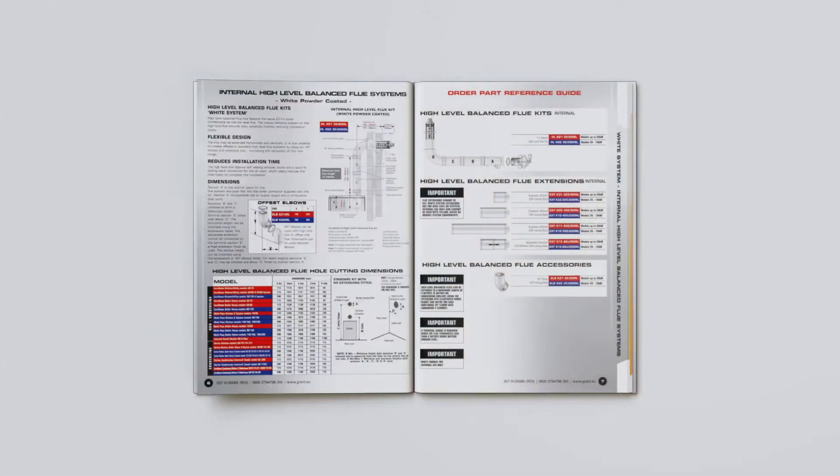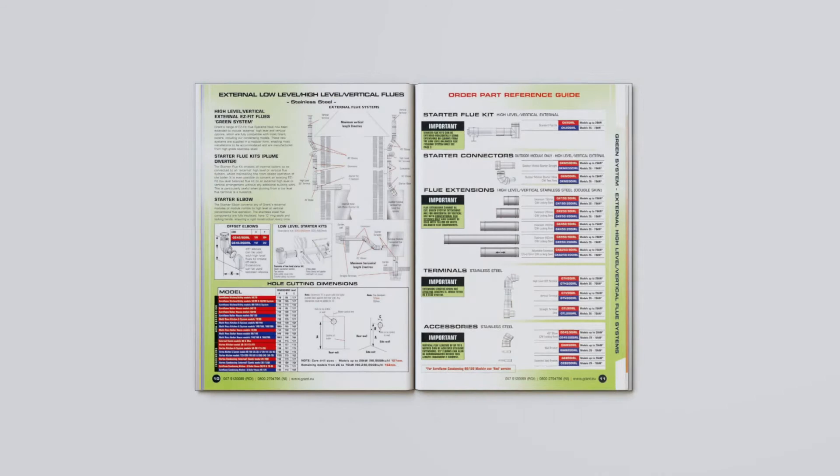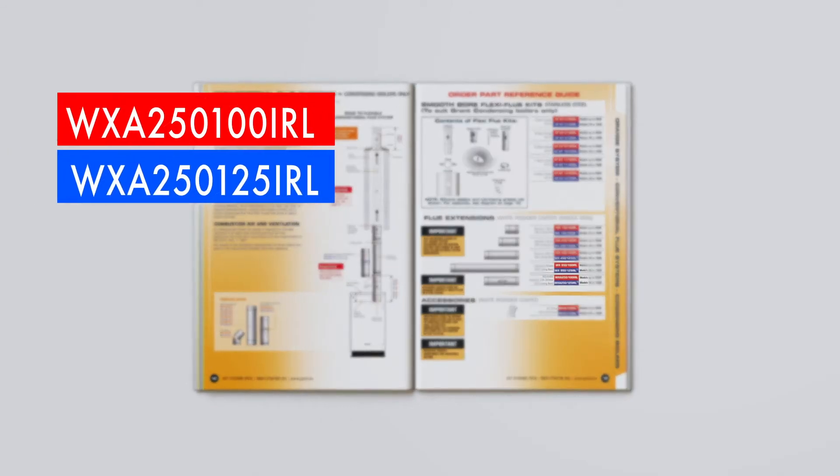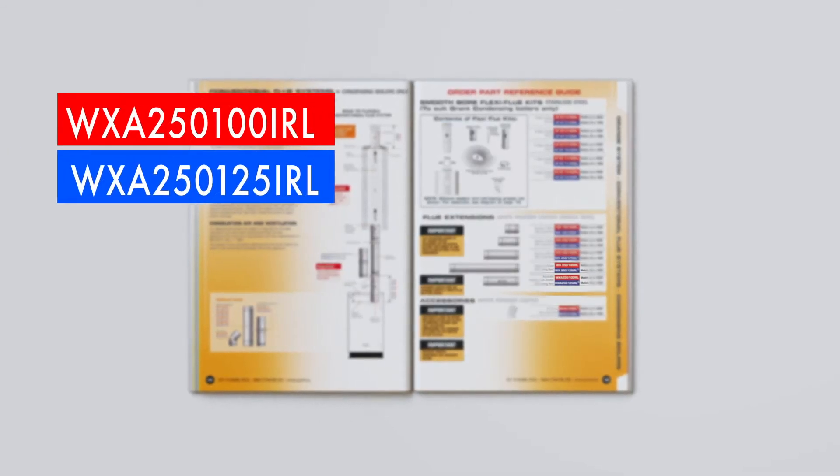Please note, within this brochure we use red and blue codes to reference the part codes of the flue systems that match the different output ranges of the boiler.